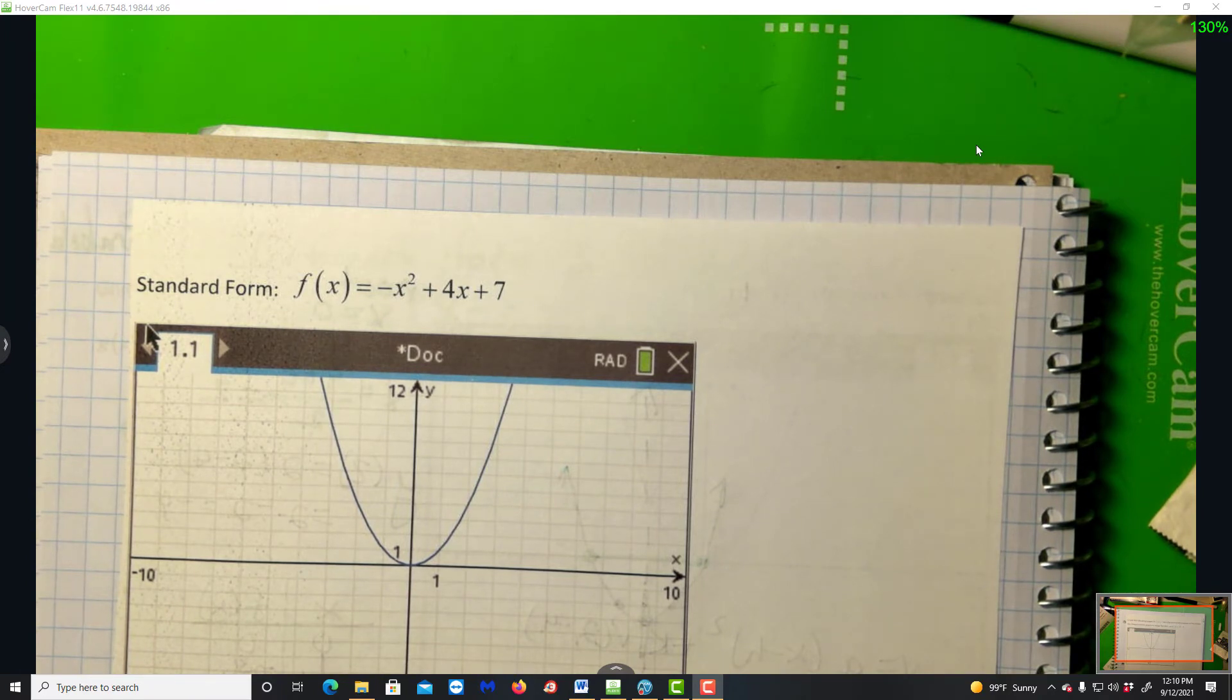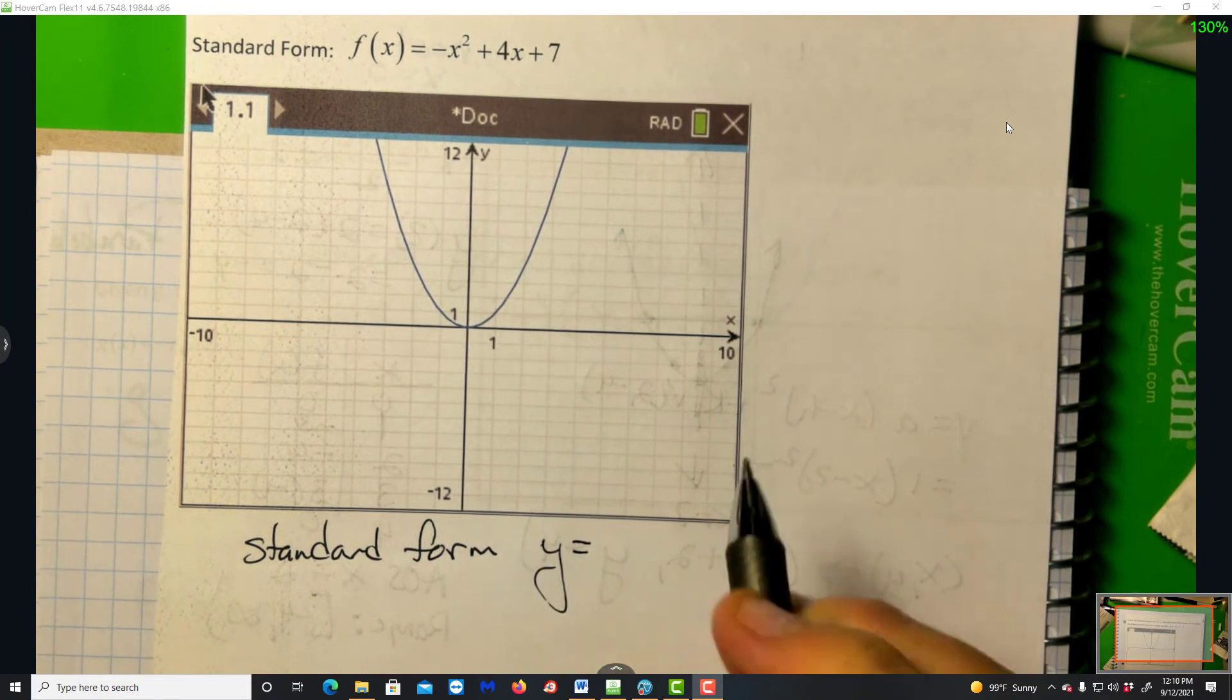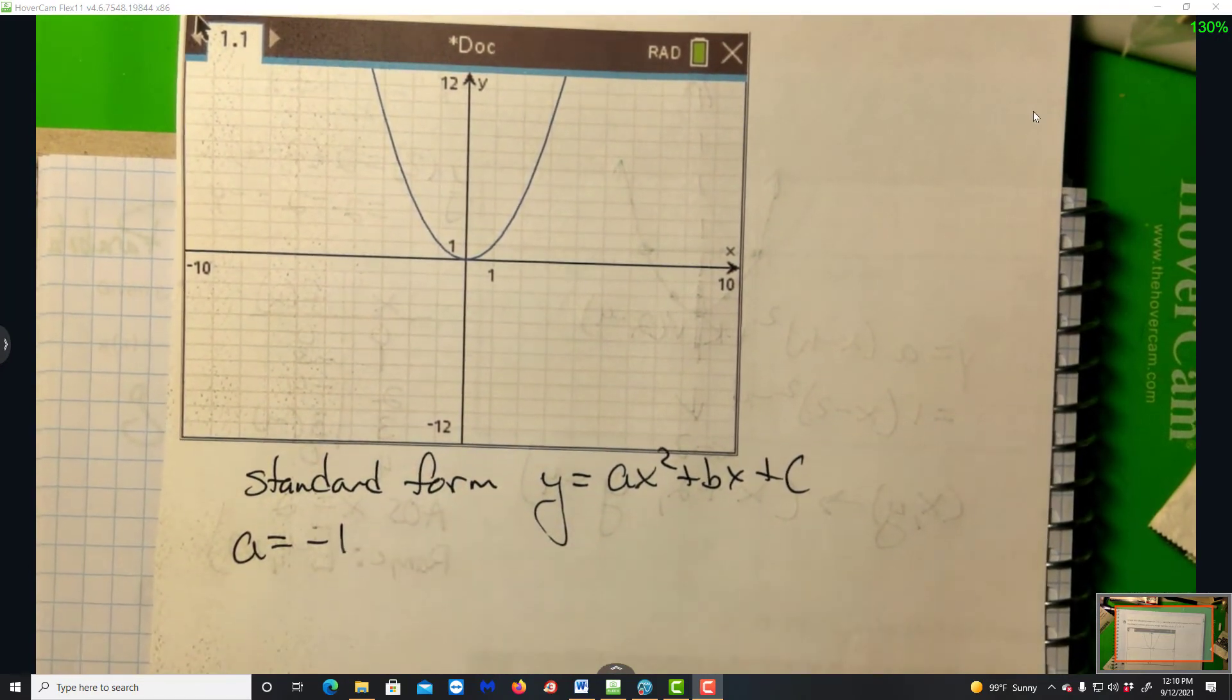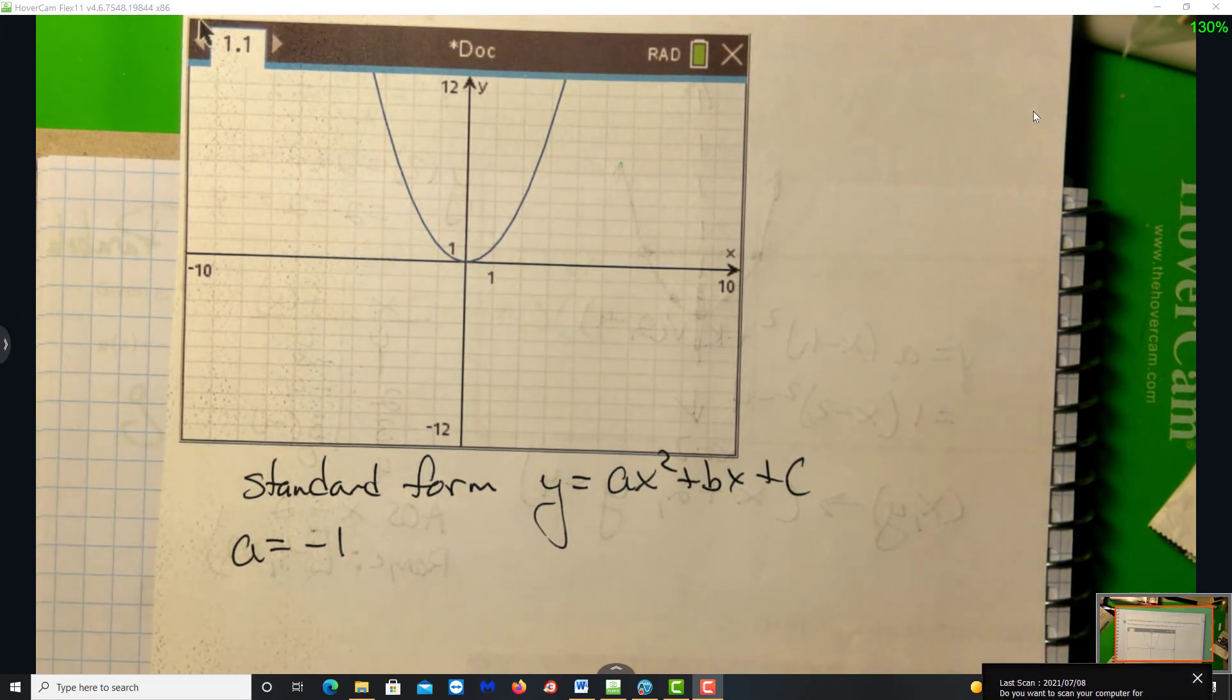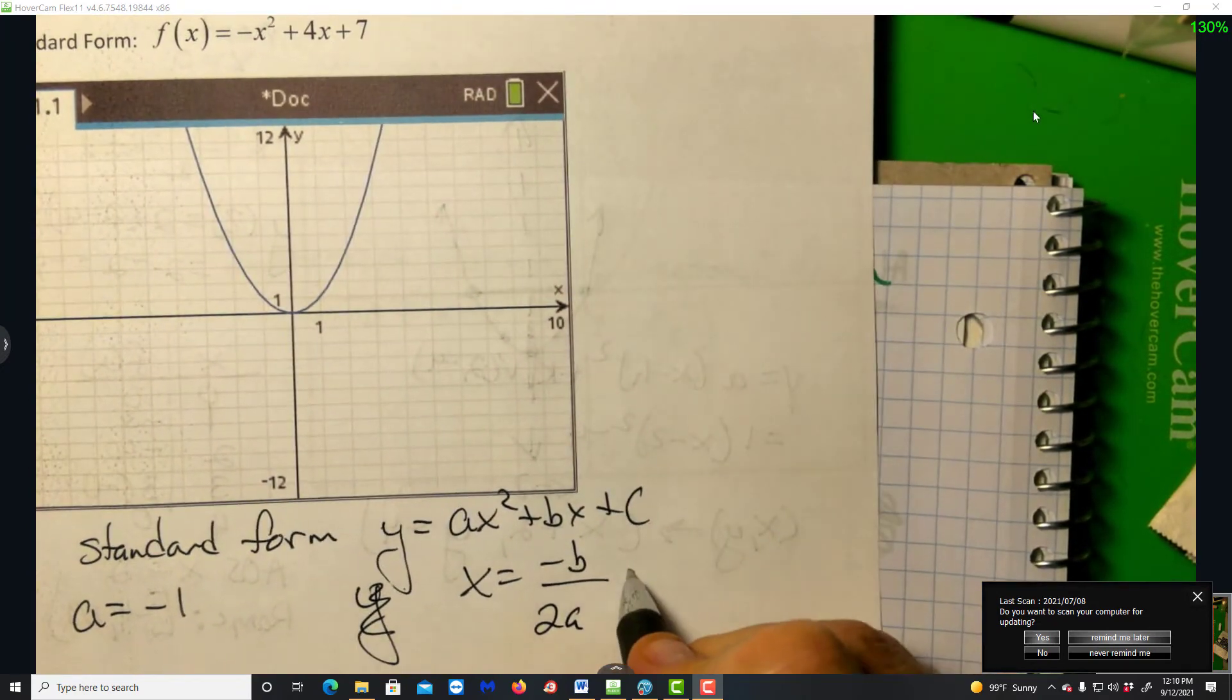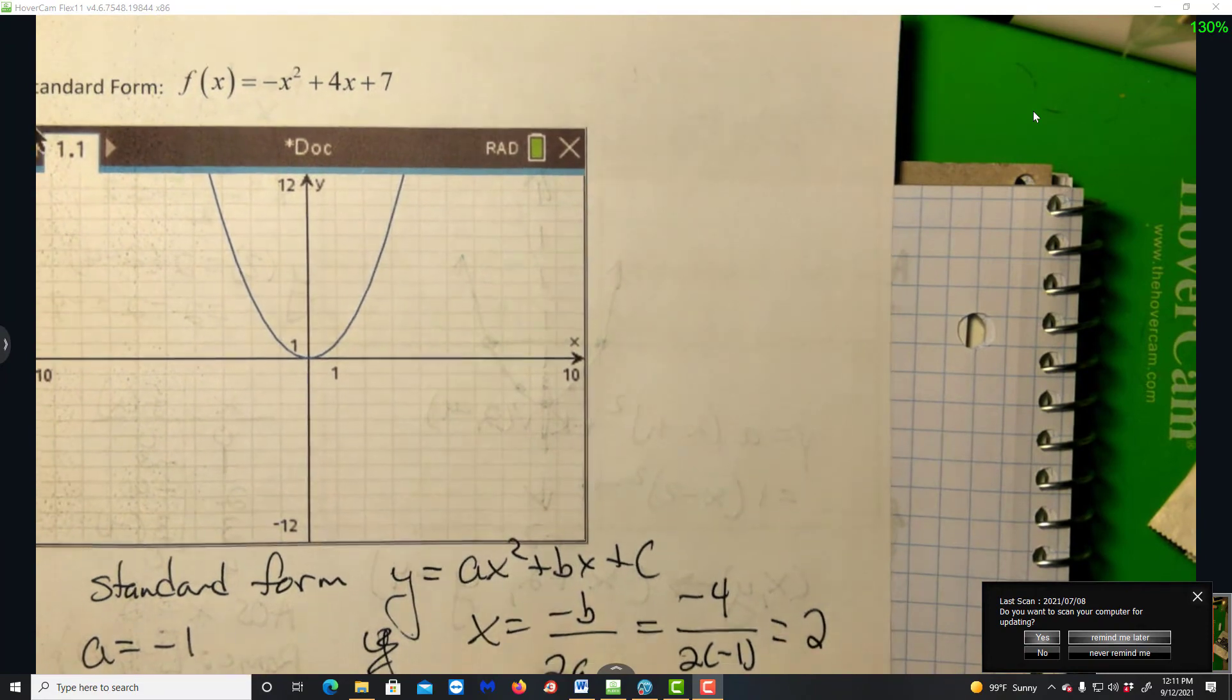The third form is standard form. y equals ax squared plus bx plus c. For us, a is negative 1. What's that tell me? That means it's opening downwards. It's been reflected over the x-axis. Because of symmetry, you should remember that x is the opposite of b over 2a. So for us, the opposite of 4 is negative 4 over 2 times negative 1. Negative 4 divided by negative 2 is 2. So at x equals 2.